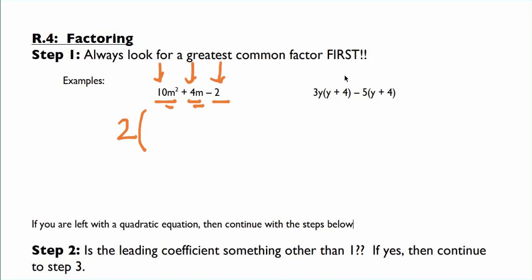When we divide 10 by 2, we're left with 5m squared. When we divide 4m by 2, we're left with 2m. And when you divide 2 by 2, we're left with 1. That would be our factored expression. Later we'll talk about how to factor a quadratic like this, but in this case that quadratic can't be factored any farther.